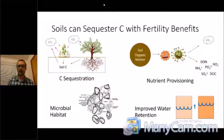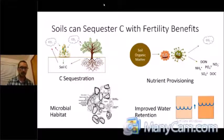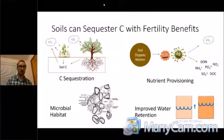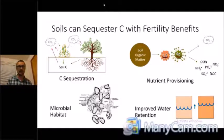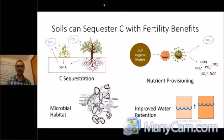We know that soil organic matter provides microbial habitat. Just as we think of lush ecosystems that support macro vertebrates, on a microbial level we want to have lots of soil organic matter — lots of resources that different microbes, whether bacteria, fungi, or larger micro-invertebrates, can thrive on, because that's really where they get a lot of their energy from: processing this organic matter.